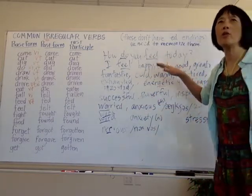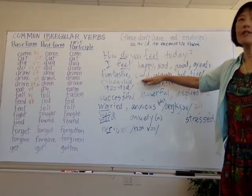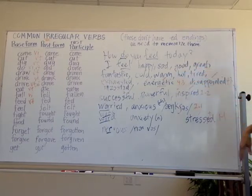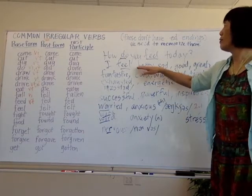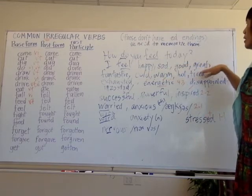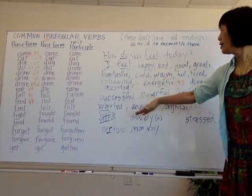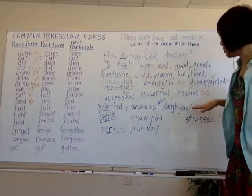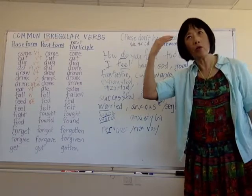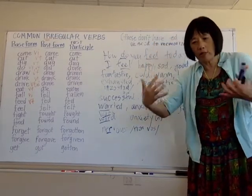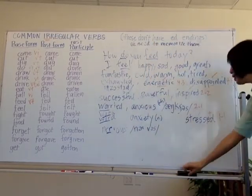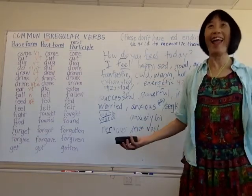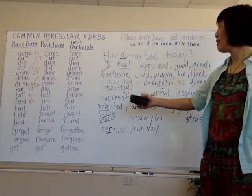So when people ask 'how do you feel?' there are a lot of adjectives you can use. Some are physical: cold, warm, hot, cool. Some are emotional: happy, sad, good, great, fantastic. And some combine mental and physical states — like when you are stressed, you have both emotional and physical tension. So you need more vocabulary to answer 'how do you feel today?'